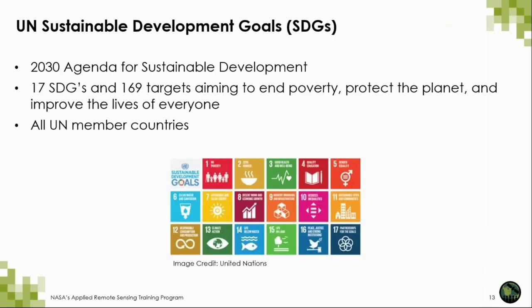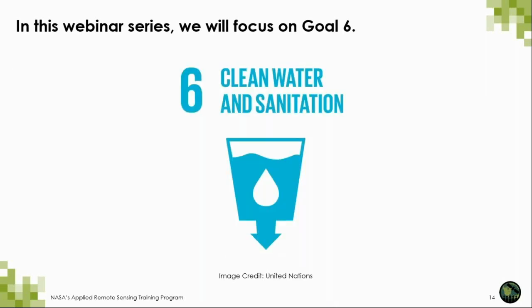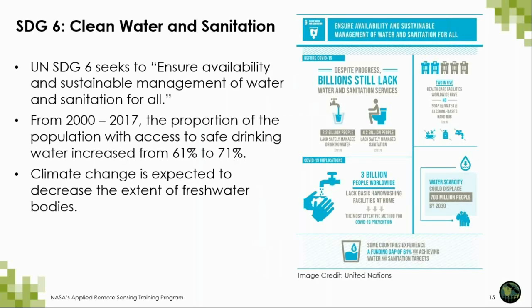Now we'll talk about the UN Sustainable Development Goals and how mangroves fit into the SDGs. The Sustainable Development Goals are part of the 2030 Agenda for Sustainable Development. In total, there are 17 Sustainable Development Goals and 169 targets that aim to end poverty, protect the planet, and improve the lives of everyone. These goals have been accepted by all UN member countries. In this webinar series, we'll focus on Goal 6, which is clean water and sanitation.